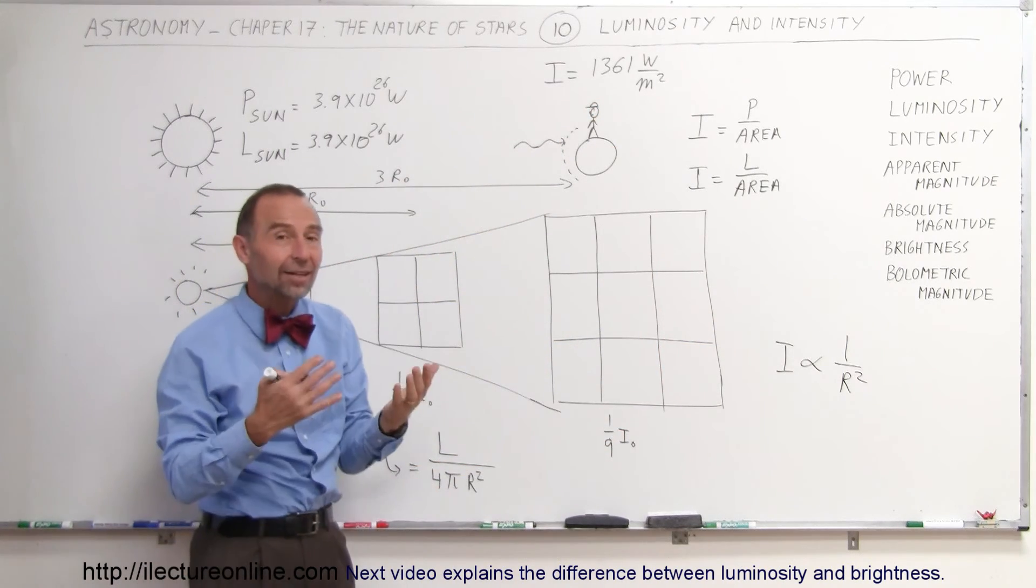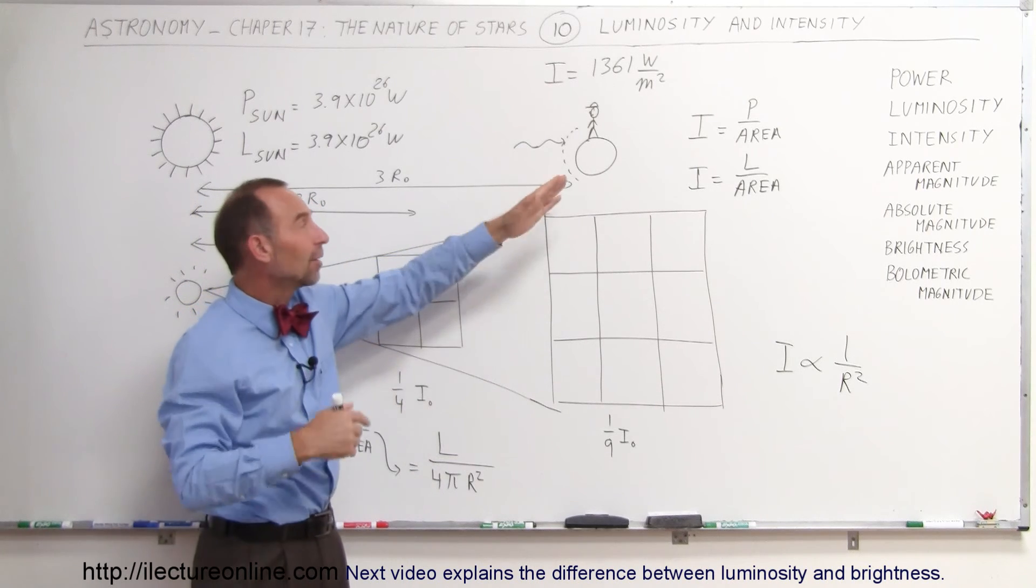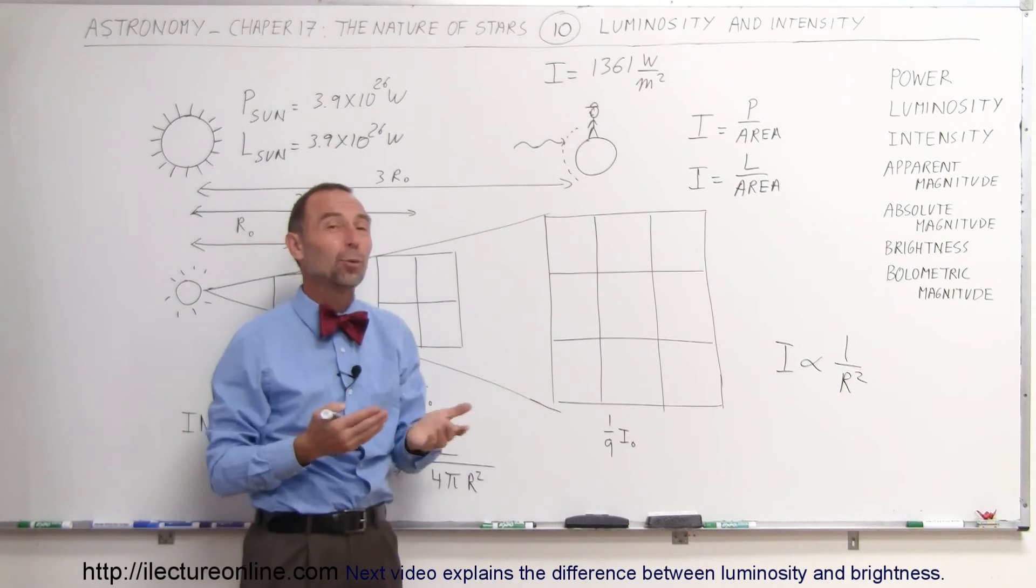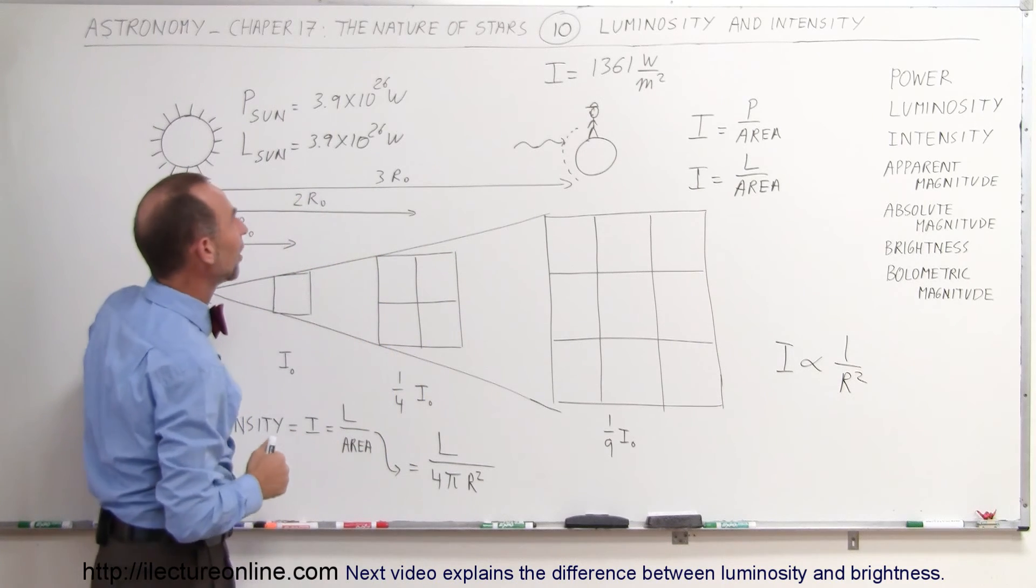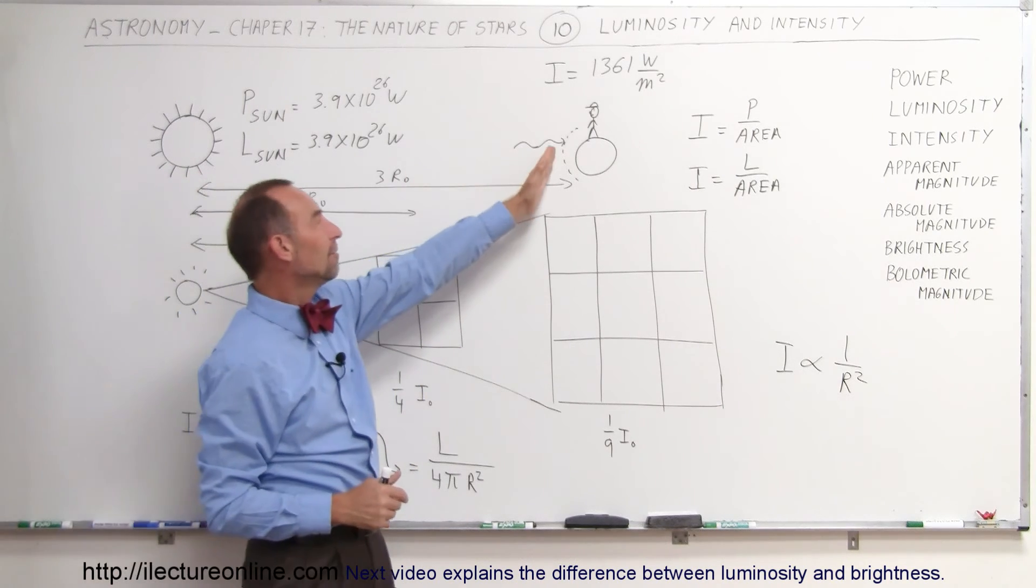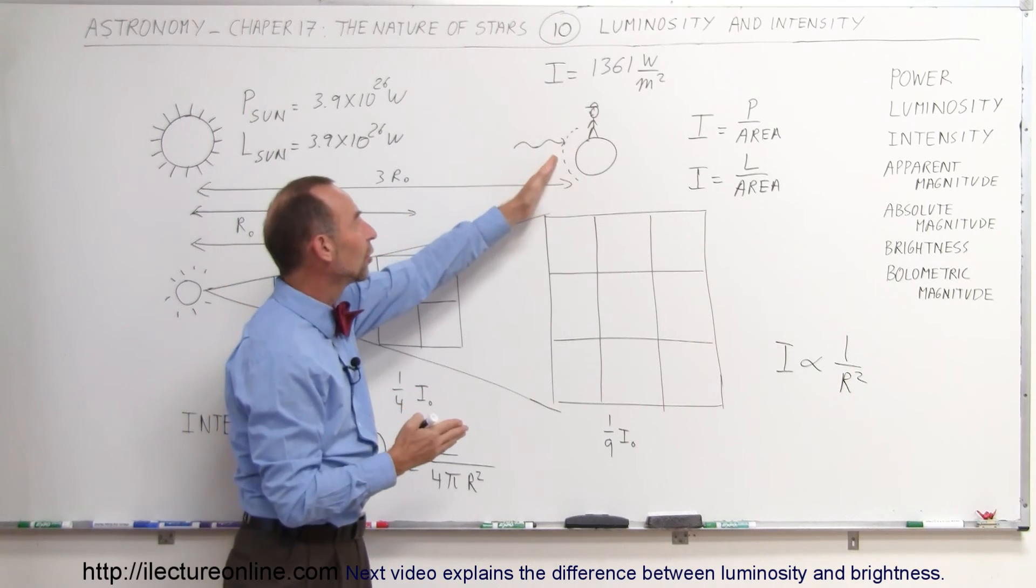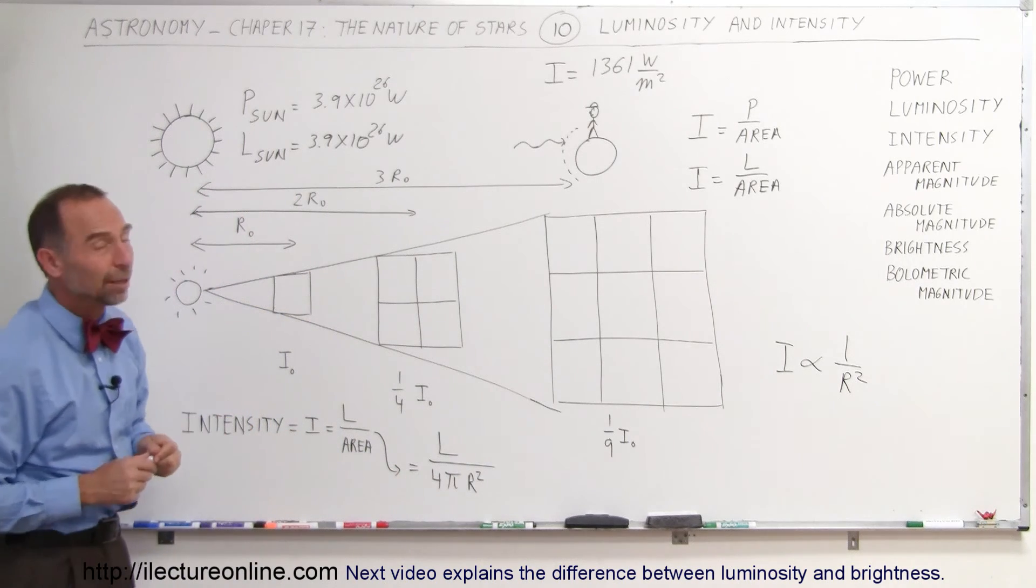And then, of course, on cloudy days when the Sun really holds back more of the energy, the atmosphere and the clouds, then it may be less than 700, may only be 600 or 500 watts per square meter of energy that the surface of the Earth receives from the Sun. But at the very top of the atmosphere, when the energy reaches the Earth, we can say that the intensity at that point is about 1361 watts per square meter.